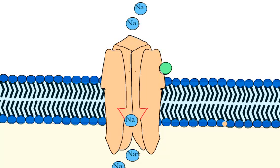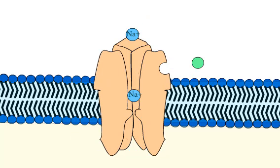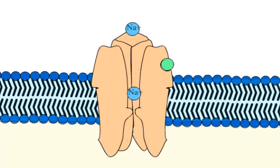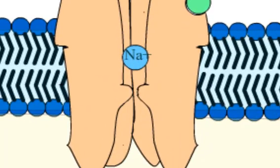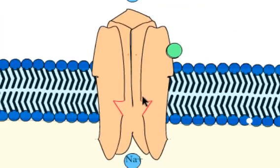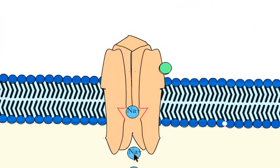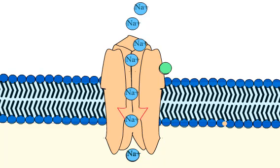When acetylcholine binds, the kinked alpha helices either straighten out or swing out of the way and cause opening of the channel pore. This pore allows sodium ions to flow down their electrochemical gradient into the cell.